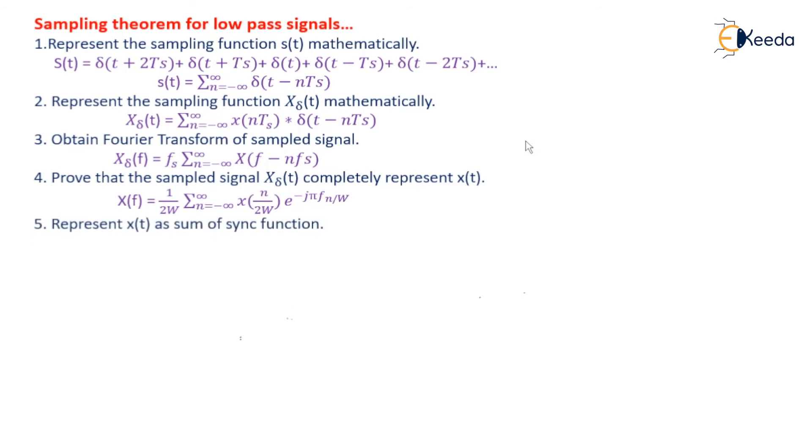The next step is representing x(t) as a sum of sinc function. Sinc function is nothing but a symmetrical function. It is represented by x(t) = summation of n equal to minus infinity to infinity x(n/(2w)) sinc(2wt - n).